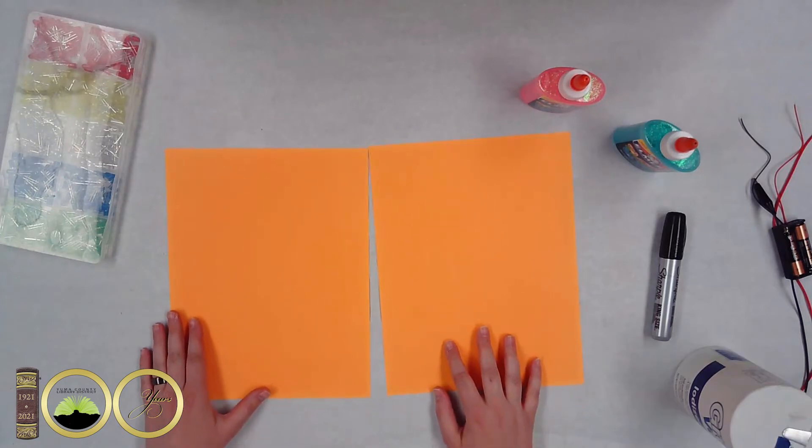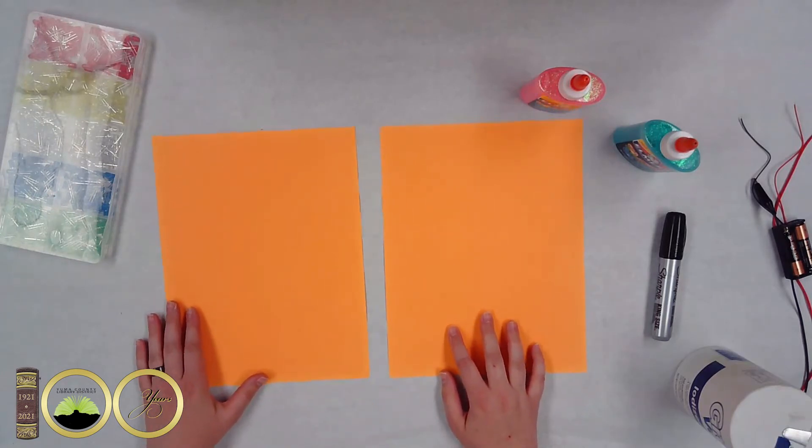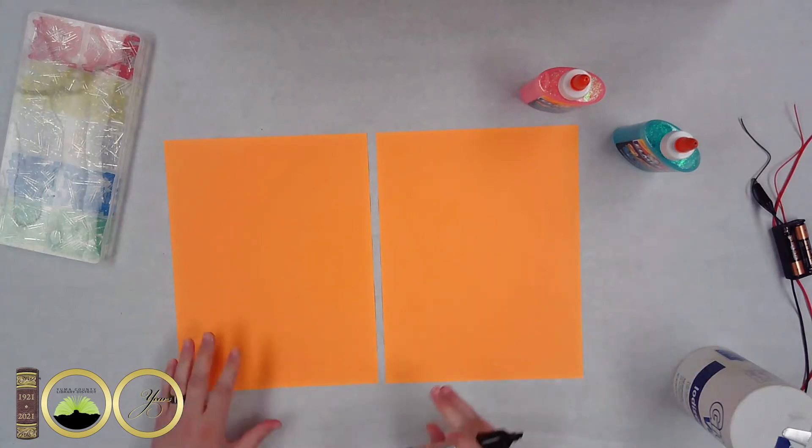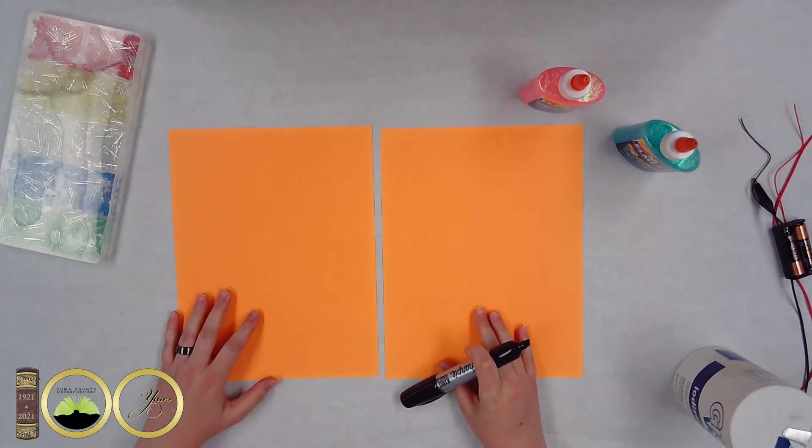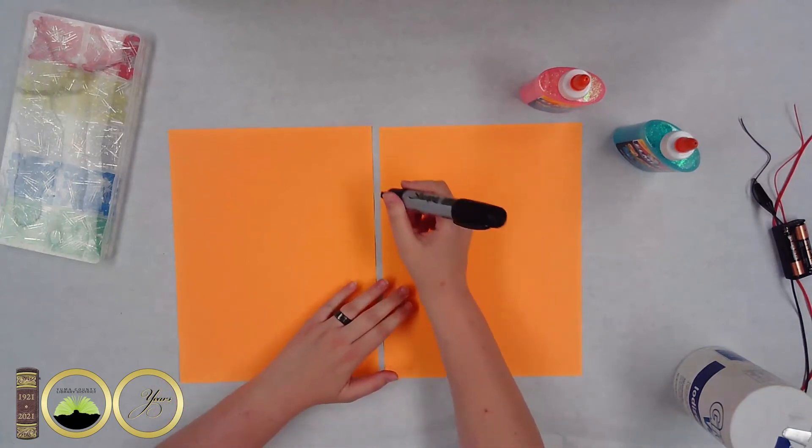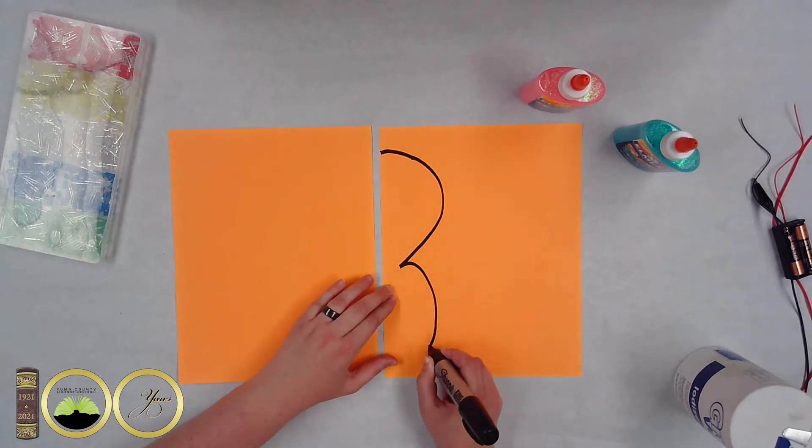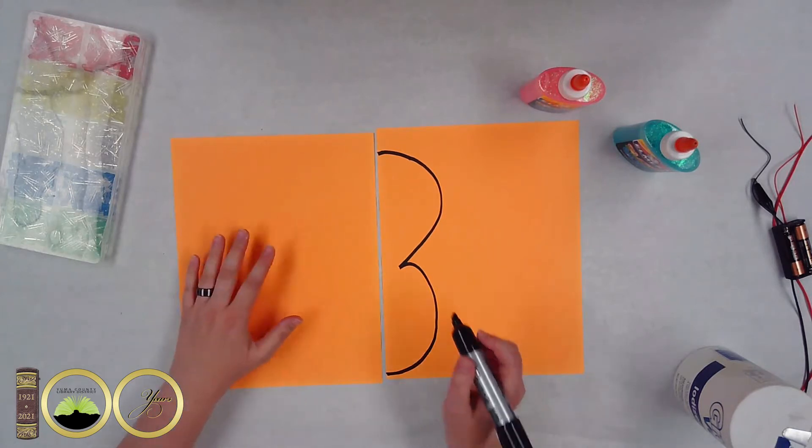So now for the instructions, go ahead and take your two pieces of construction paper and line them up and put a small gap in between. Next you'll take your marker and go ahead and draw your design.